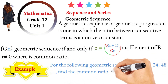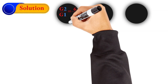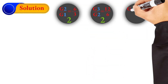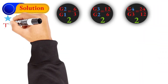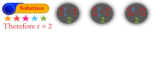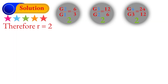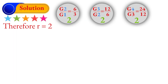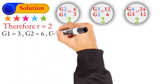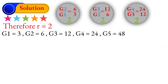Find the common ratio and the sixth term. The common ratio r will be 2. Here a1 which is g1 is 3, g1 is a geometric sequence. G1 is 3, G2 is 6, G3 is 12, G4 is 24, G5 is 48. So G6...